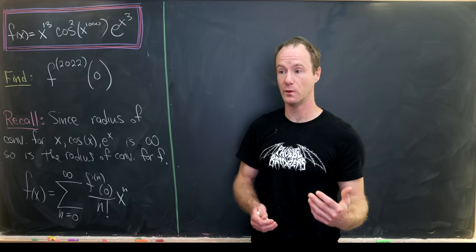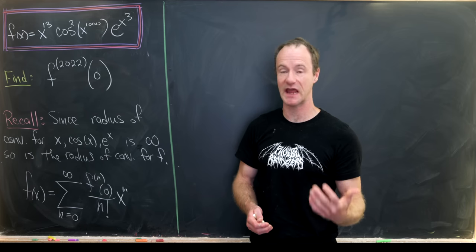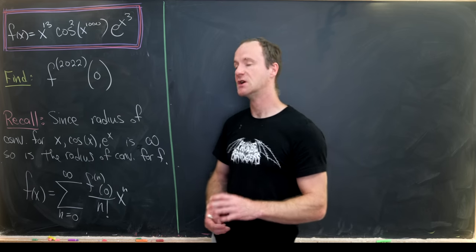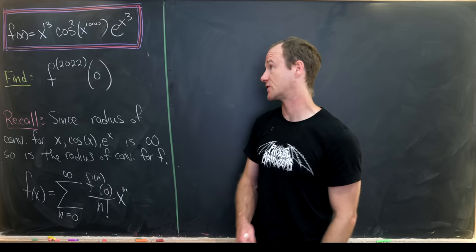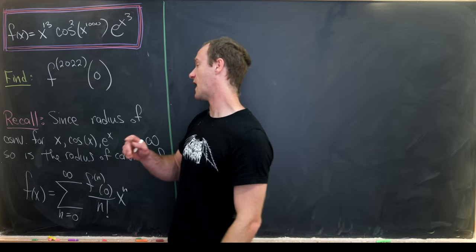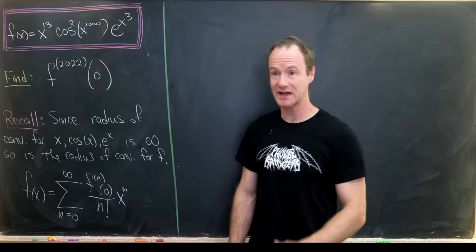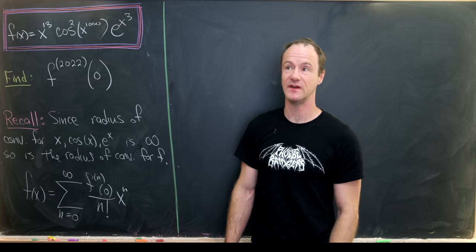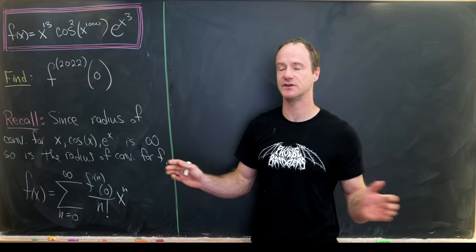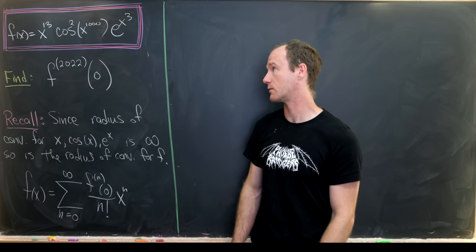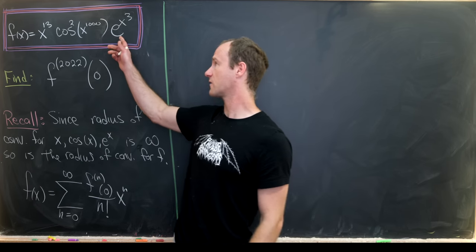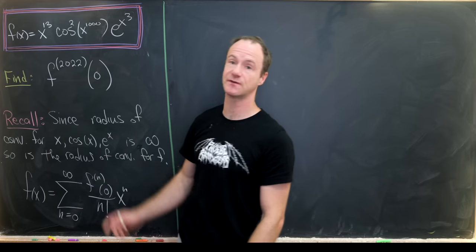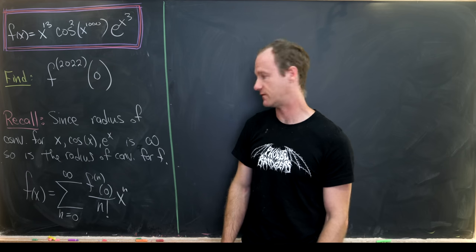And the trick will be to expand this as a Taylor series based at zero, in other words a Maclaurin series. So let's recall from a second semester calculus type course that the radius of convergence for x, the cosine of x, and e to the x are all infinity. So that means if we expand them as a power series they're convergent over the whole real number line. Furthermore our function f is built from these three functions, so the radius of convergence for our function is also infinity.